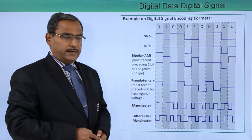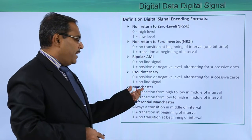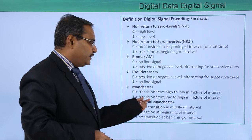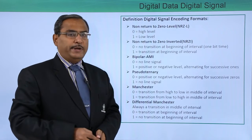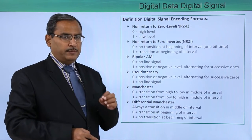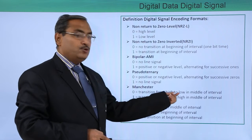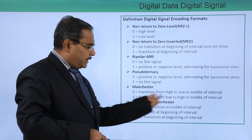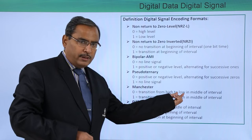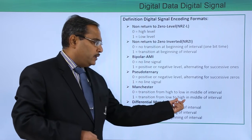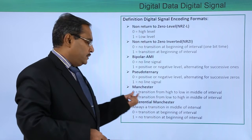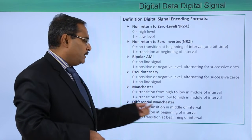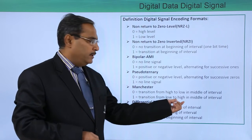Next we go for Manchester encoding. In Manchester, 0 means a transition from high to low in the middle of the interval, and 1 means a transition from low to high in the middle of the interval. There is always a transition in the middle. Remember: 0 means ultimately ending at low level (high to low), and 1 means ultimately ending at high level (low to high).